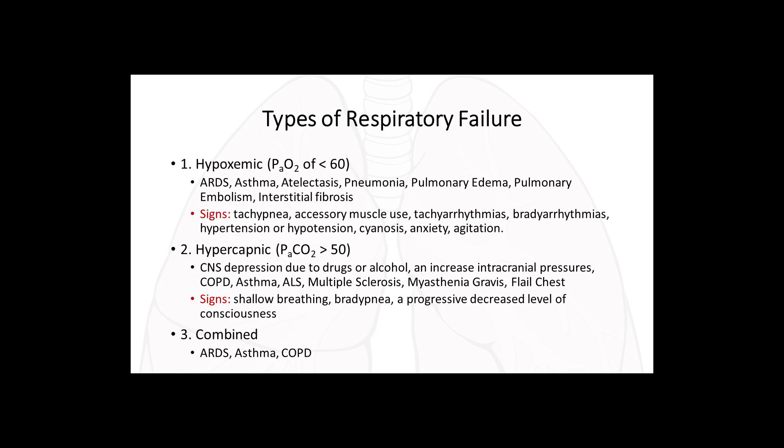Types of respiratory failure: hypoxemic respiratory failure occurs when PaO2 is less than 60 on the ABG. Causes include ARDS, asthma, atelectasis, pneumonia, pulmonary edema, pulmonary embolism, and interstitial fibrosis. Signs include tachypnea, accessory muscle use, tachyarrhythmias, bradyarrhythmias, hypertension or hypotension, cyanosis, anxiety, and agitation.